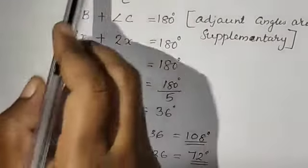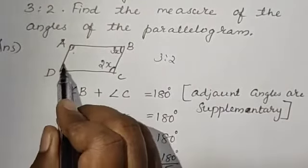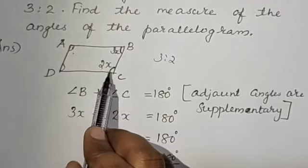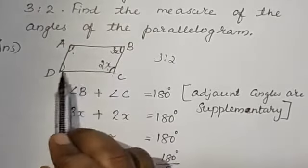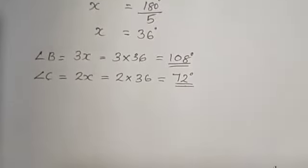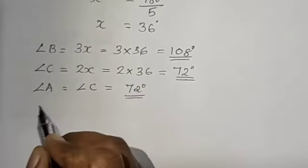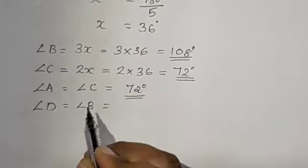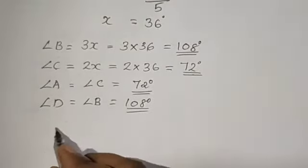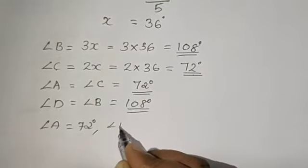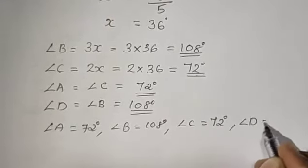Now we have to find the other angles — angle A and angle D. We know in a parallelogram the opposite angles are equal. So angle A is equal to angle C, and angle B is equal to angle D. Angle A is equal to angle C, and we found angle C is 72 degrees. Angle D is equal to angle B, and angle B is 108 degrees. So angle A is 72°, angle B is 108°, angle C is 72°, and angle D is 108°.